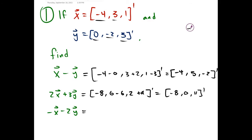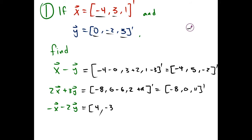Then we have negative x minus 2y. The negative of the first component of x is positive 4. The first y component is 0 again, so we can ignore that. The second component of x made negative, minus 2 times the second y component, gives positive 4 — that's negative 3 plus negative 2 times negative 2. Then the third component of x made negative, minus 2 times the third y component, gives us subtracting 6. This gives us (4, 1, -7).